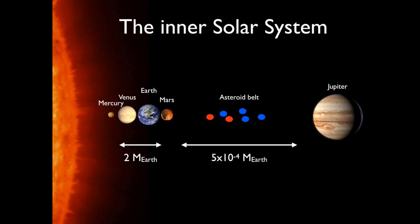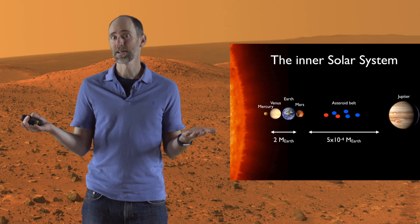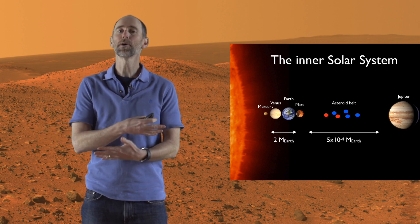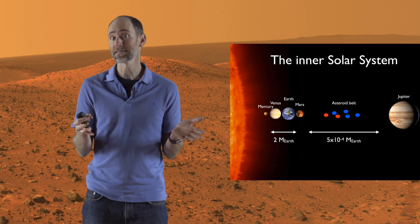Here's a cartoon of the inner solar system. We have four rocky terrestrial planets — if you add them up, they make about twice the mass of the Earth. Then there's a wide belt, the asteroid belt, and further out is Jupiter. The asteroid belt doesn't contain a lot of mass; if you add up all the asteroids, they are less than a thousandth of Earth mass.